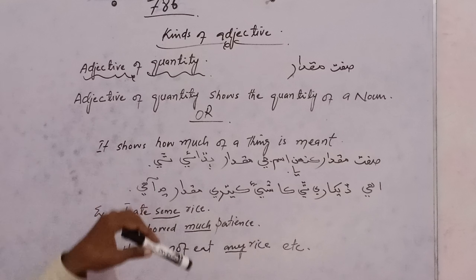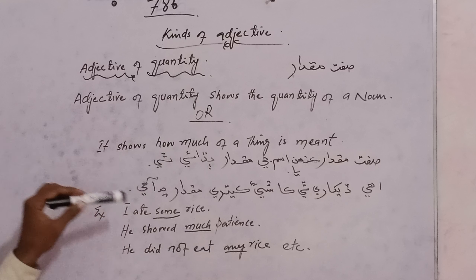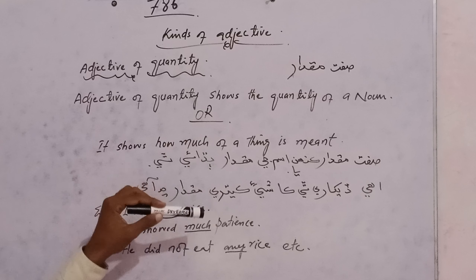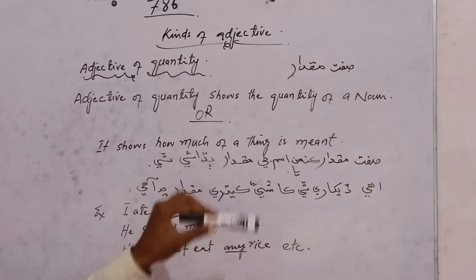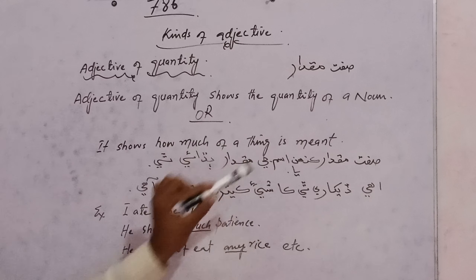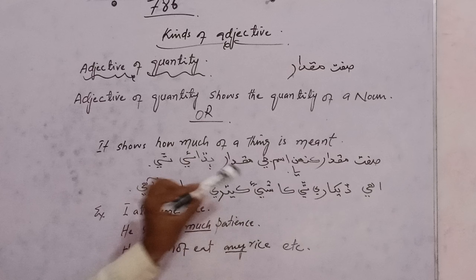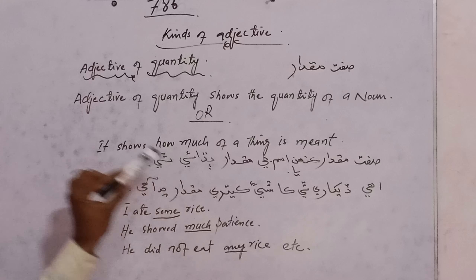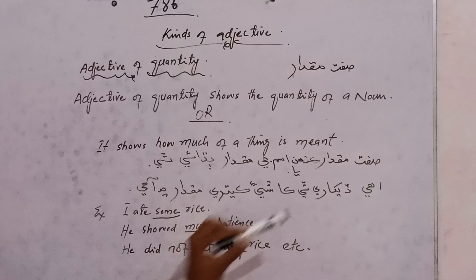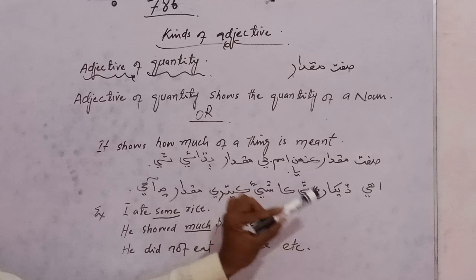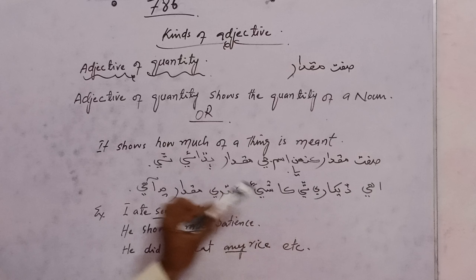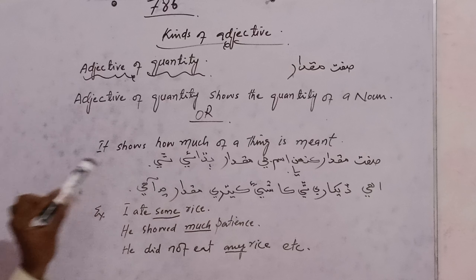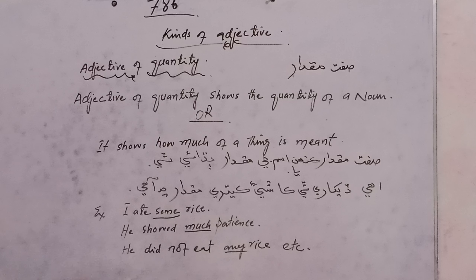Adjective of quantity shows how much a thing is. Yani sifat mikdaar ki shay je mikdaar bepad kudayeti — it indicates how much quantity of a thing is present.